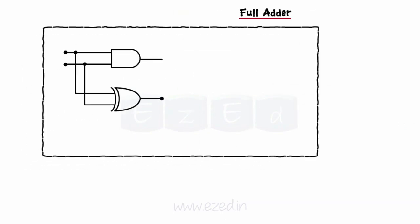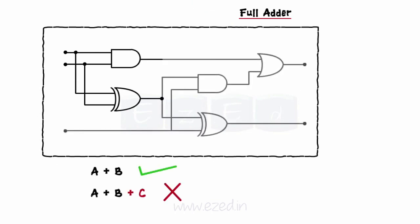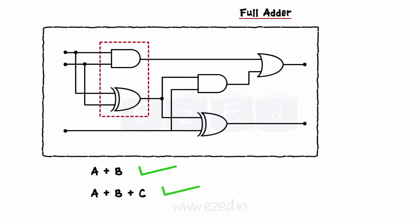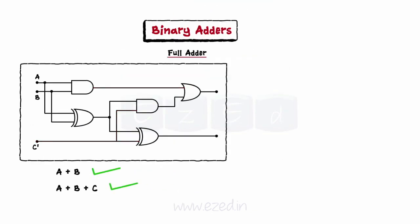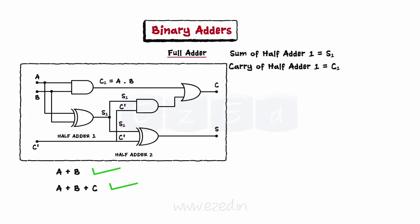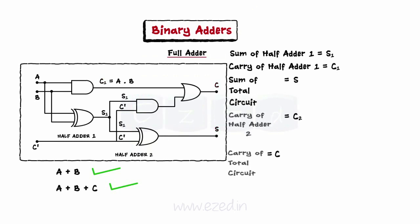Now let's move on to the full adder. As the half adder has only two inputs, we can't use it to add three numbers simultaneously. Thus, we join two half adders to form a full adder, which performs the addition of three bits. First we add two bits A and B using the first half adder, and its output is given as input to the second half adder, where input C acts as the second input. S1 is the sum of half adder 1, C1 is the carry of half adder 1, S is the sum of the entire circuit, and C is the carry of the entire circuit.